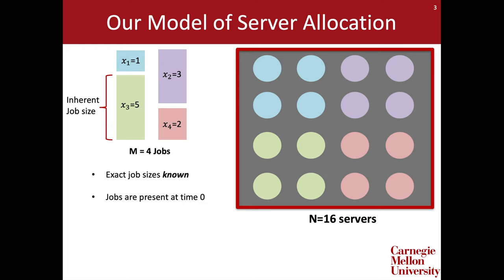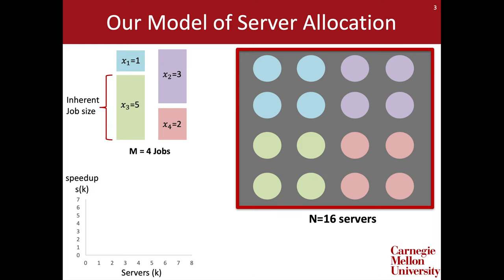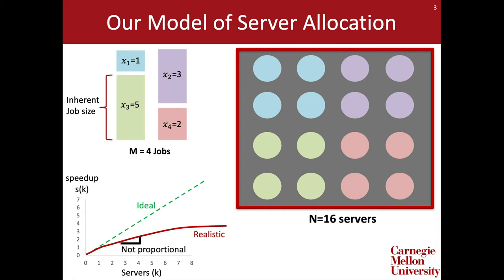I'll put servers on the x-axis and the job speedup function s on the y-axis. Ideally, jobs would get a speedup function like this green line, which tells us that jobs would run three times as fast on three servers and four times as fast on four servers. For example, the blue job would take time one on a single server but only time one-fourth on four servers. Unfortunately, realistic speedup curves look more like this red line, where the speedup is not proportional to the number of servers and jobs eventually make highly inefficient use of additional servers. We'll assume all jobs follow a single speedup function of the form s of k equals k to the p.